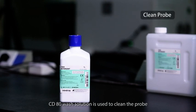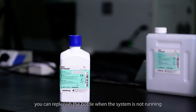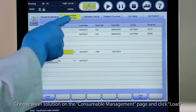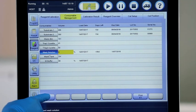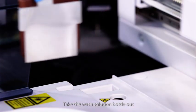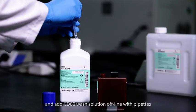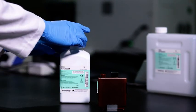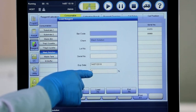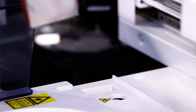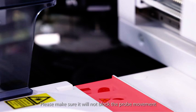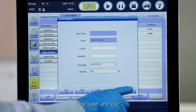CD80 wash solution is used to clean the probe. If the wash solution is used up, you can replenish the bottle when the system is not running in case of probe collision. Choose wash solution on the consumable management page and click load. Take the wash solution bottle out and add CD80 wash solution offline with pipettes. Do not add when bottle is still on the machine. Enter the following information. Put the wash solution bottle back to the position. Please make sure it will not block the probe movement. Click load and exit.